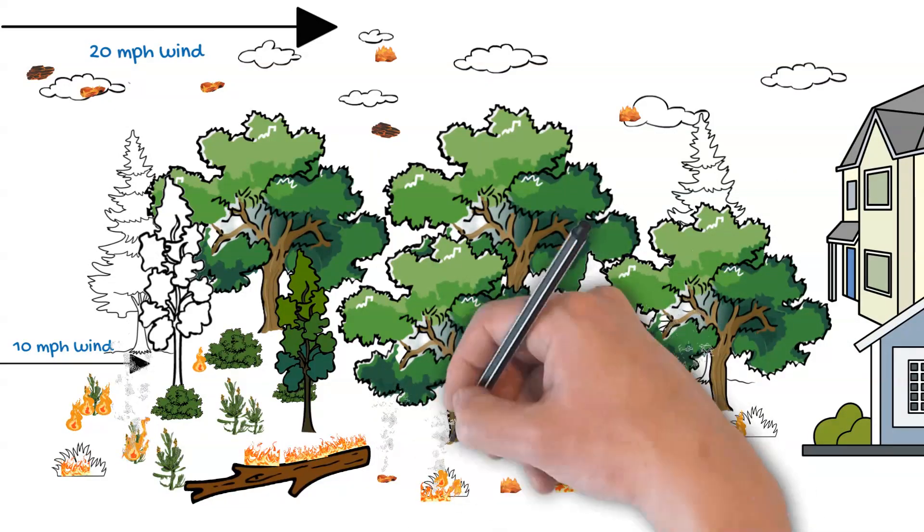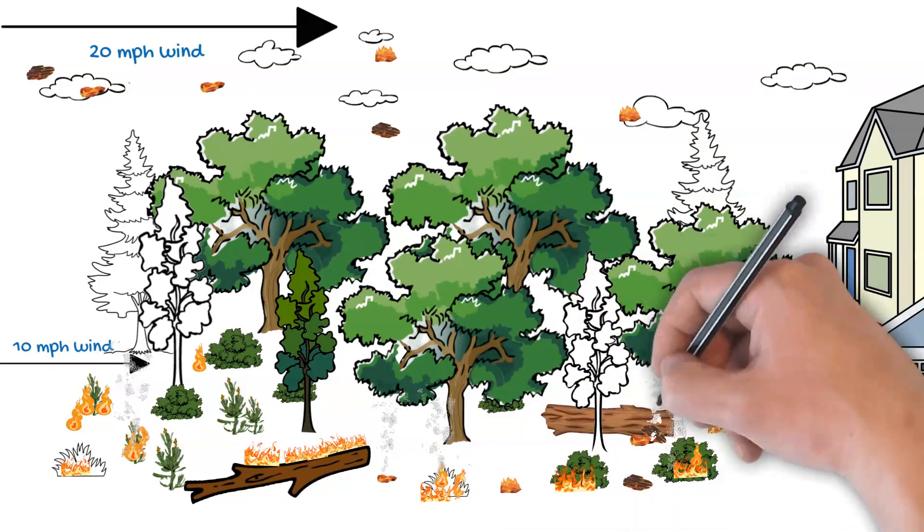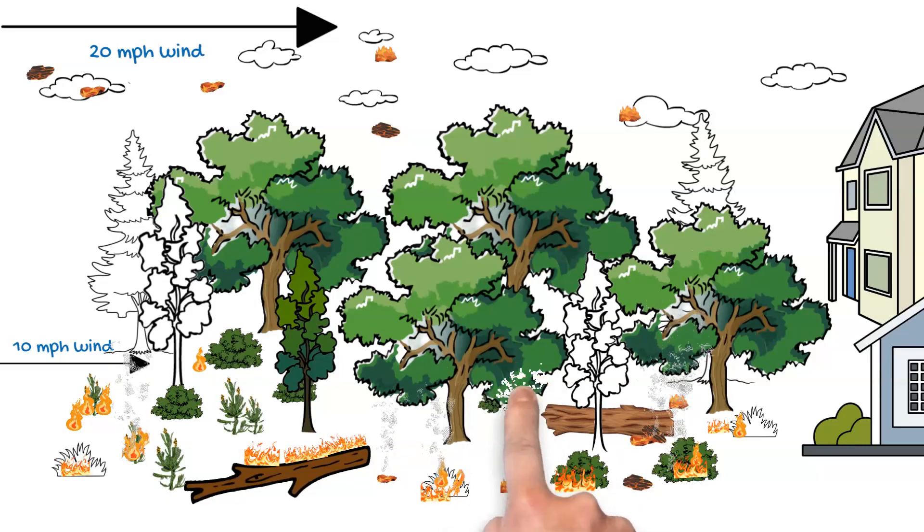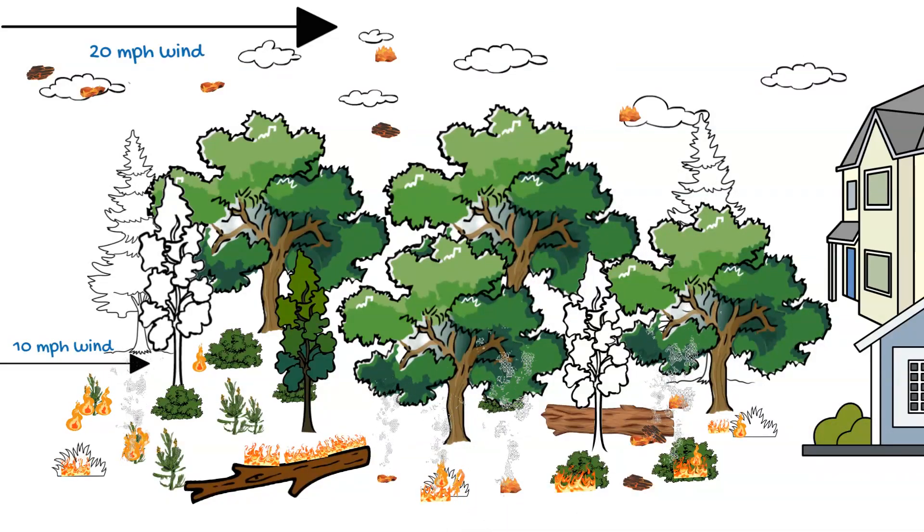And I really want to emphasize that we are not looking to stop fire with these treated areas. We're looking to modify the fire behavior. We want to decrease the intensity. We want to decrease the rate of spread. And we want to keep the fire on the ground. This equals more time to evacuate under safer circumstances. And it allows our firefighters access and a chance to suppress the fire.